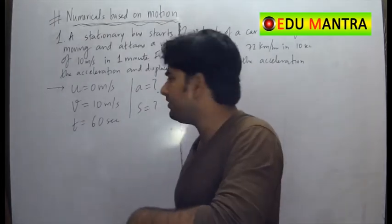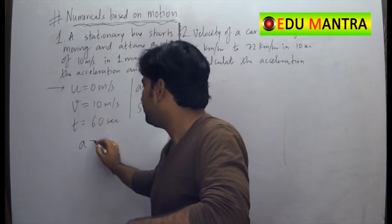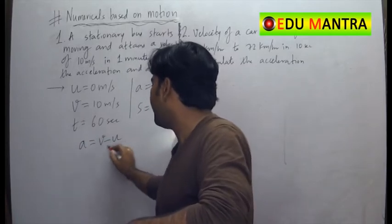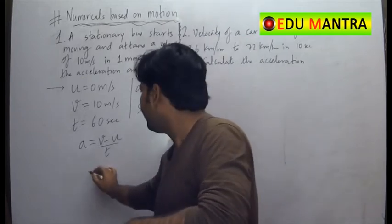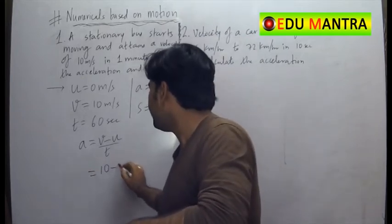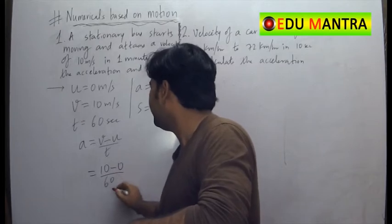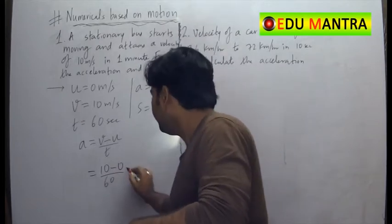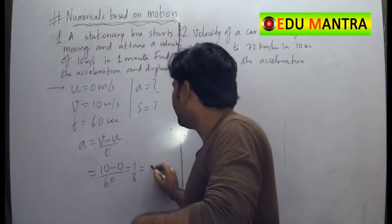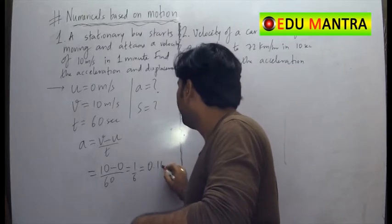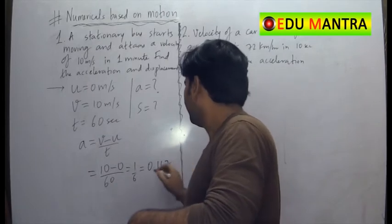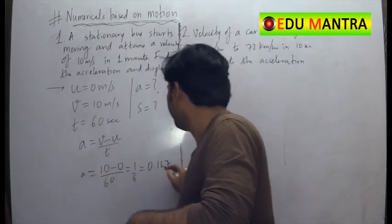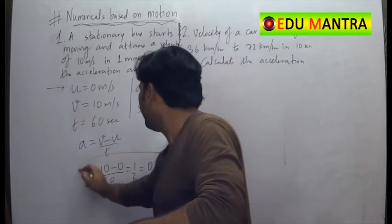So we need to find A and S. What is the formula of acceleration? Yes, it is acceleration is rate of change of velocity. So final minus initial velocity by time. So that is 10 minus 0 by 60, which is 1 by 6, it can even be written as 0.167. So the acceleration is 0.167 meter per second square.